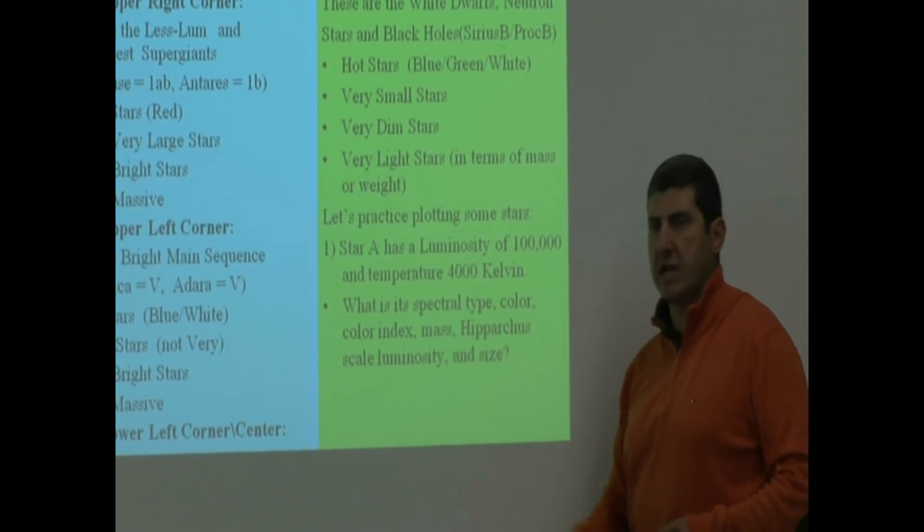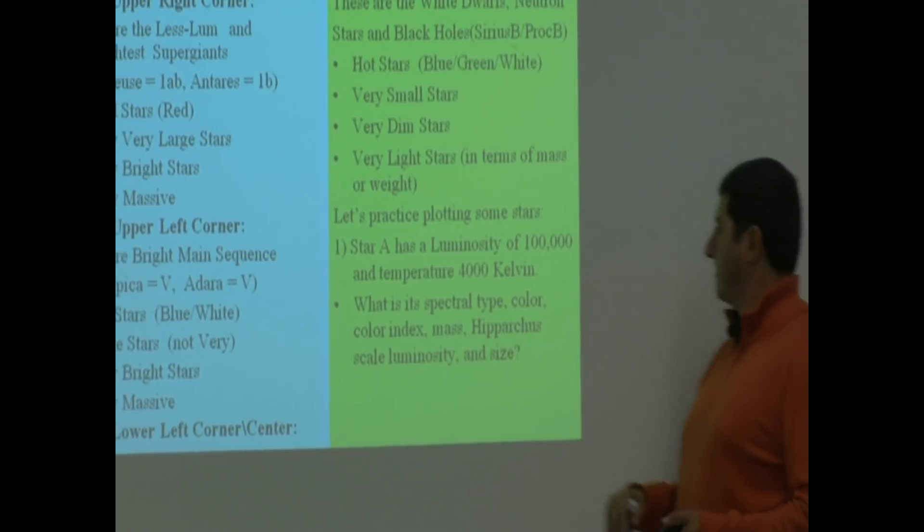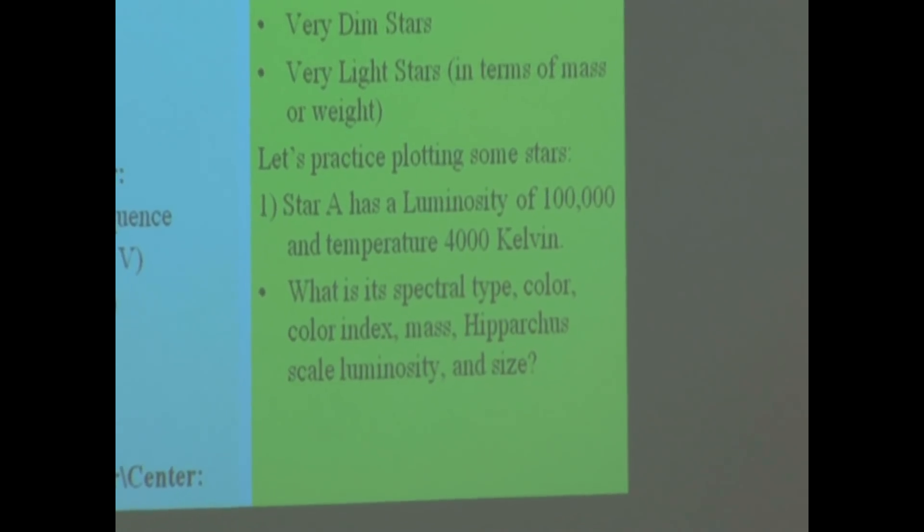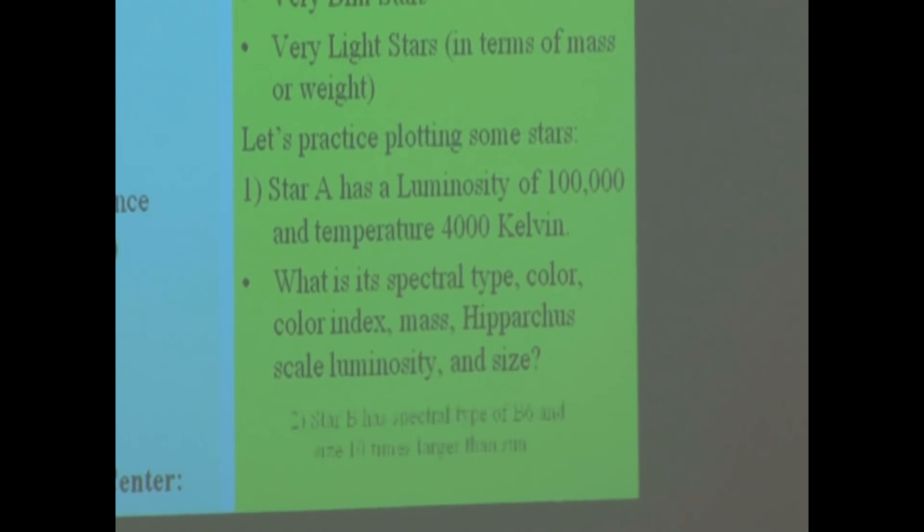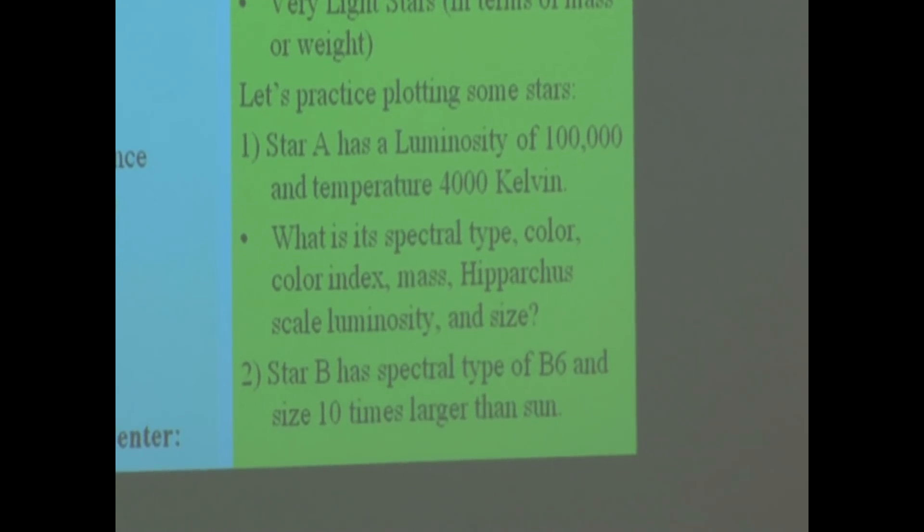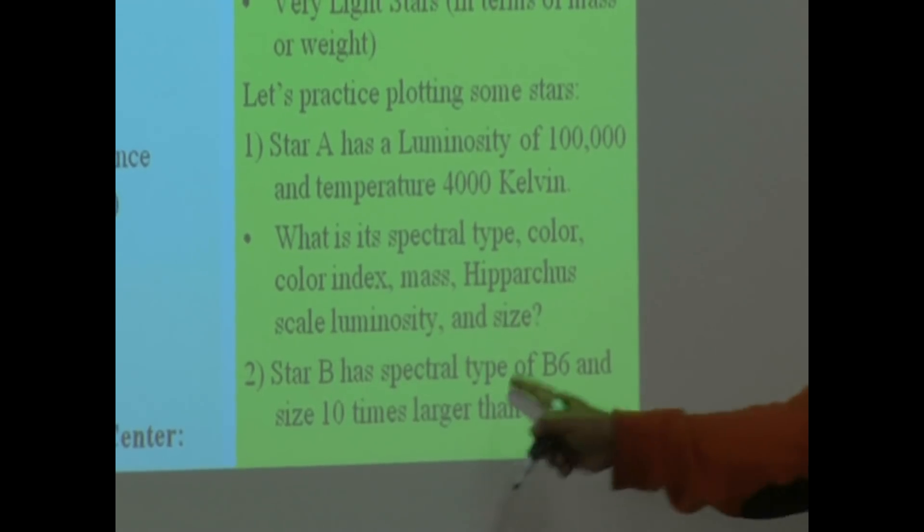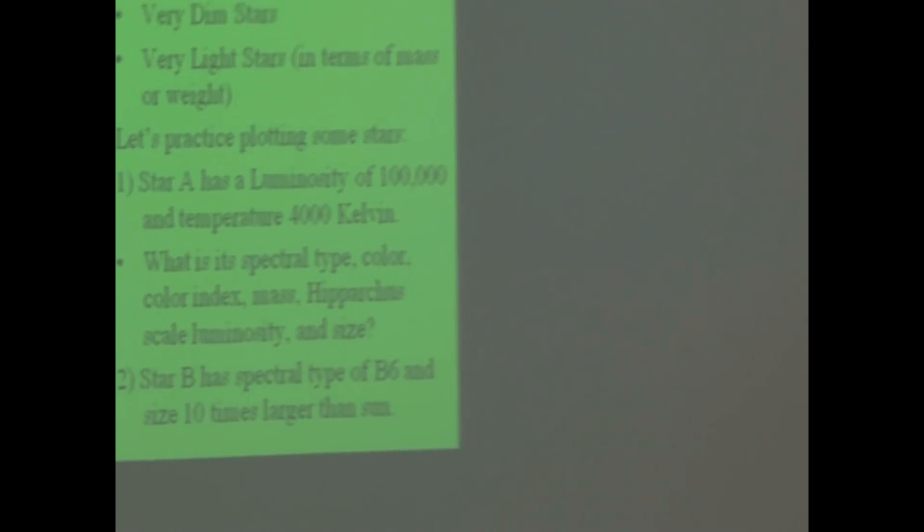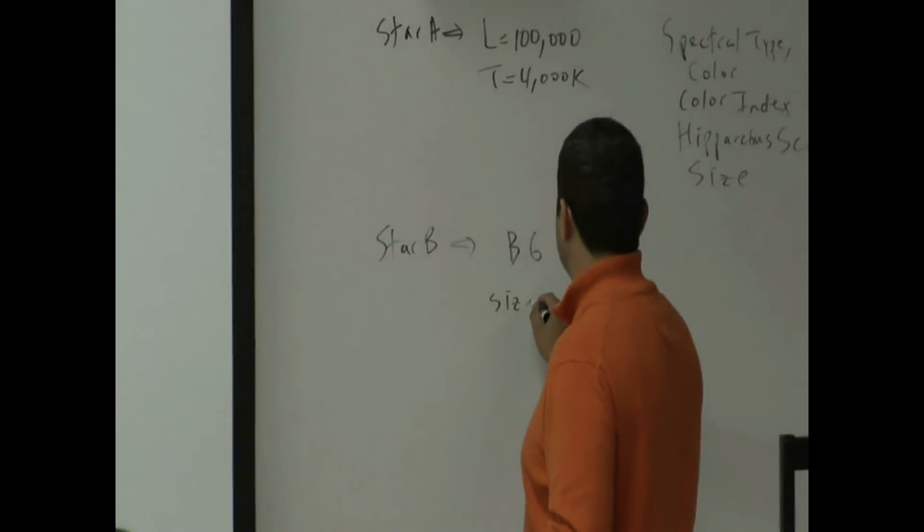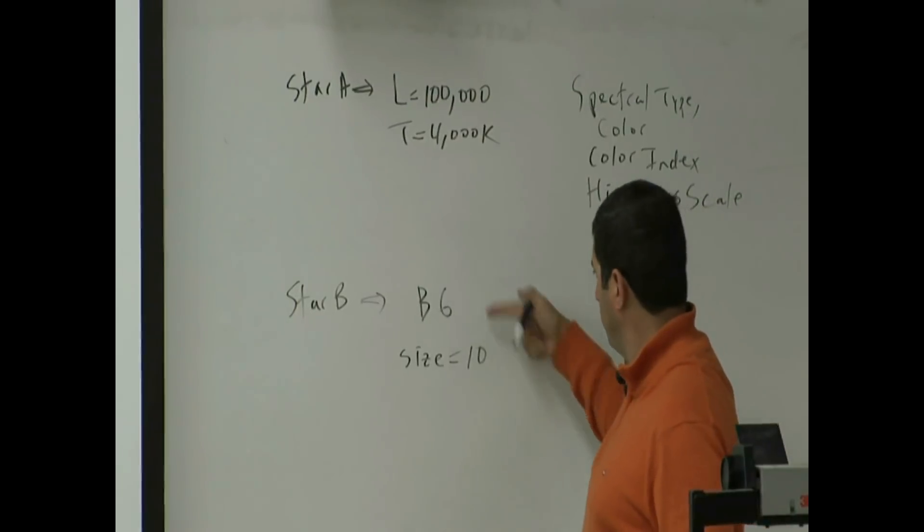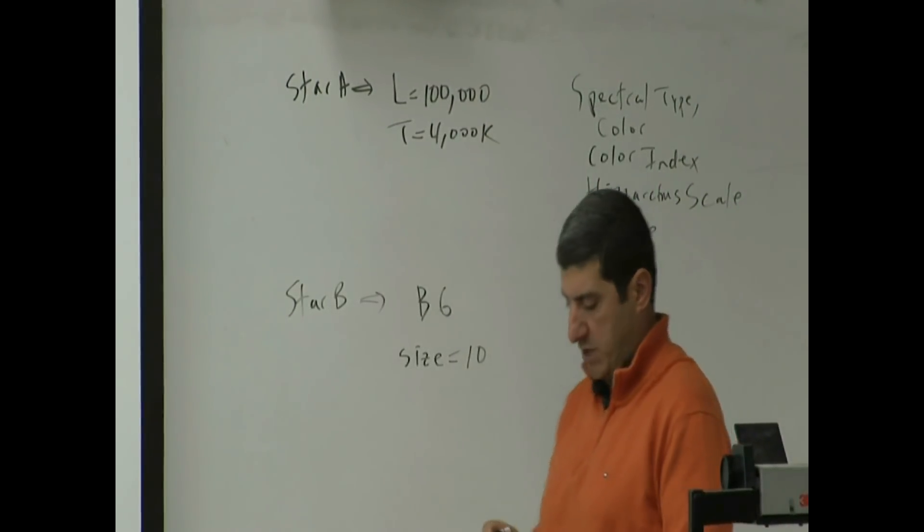What is the spectral type of that star? What is the color of that star? Star B has a spectral type of B6 and size ten times larger than the sun. As long as you know two pieces of information.